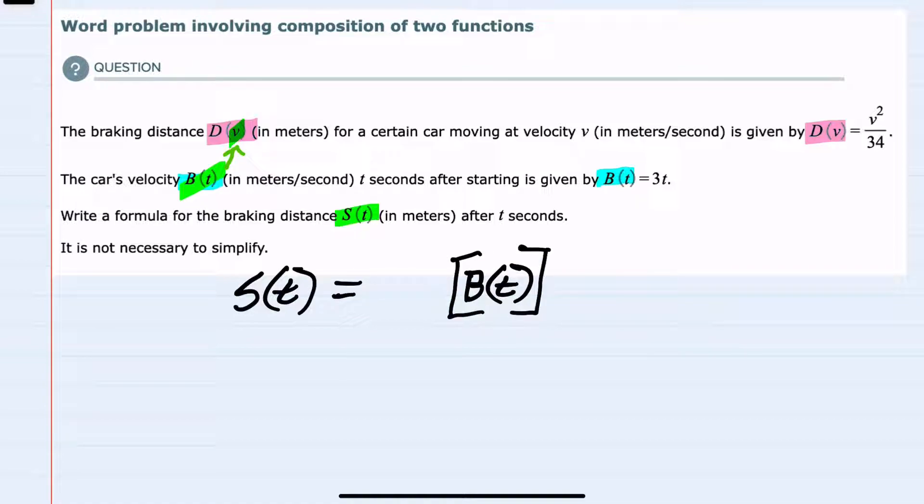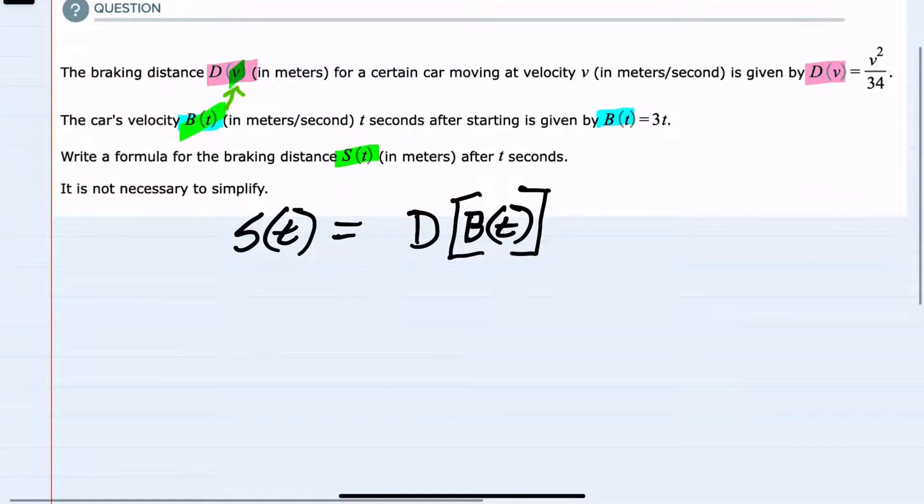into our distance function. And to see what that looks like, our breaking function here, b of t is 3t. If that's what's being plugged in to the distance function for v,